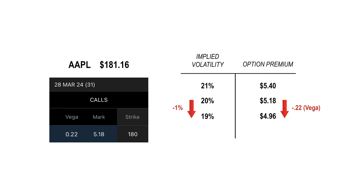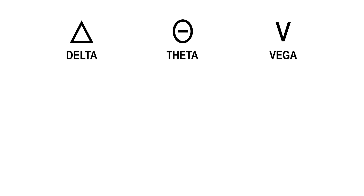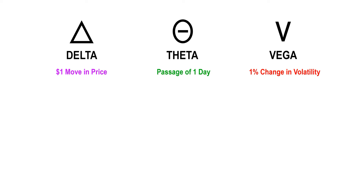So these are the main three that affect the option premium the most. Just to review: delta shows the effect on the premium from a $1 move in price; theta shows the decay in value from the passage of one day; and vega estimates the change from a 1% move in volatility.